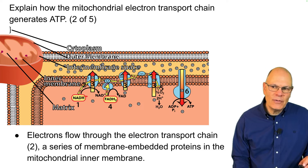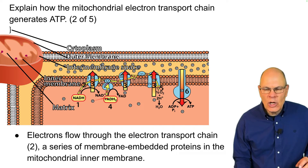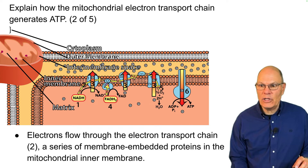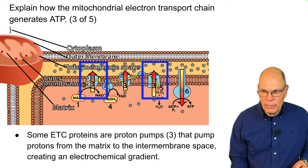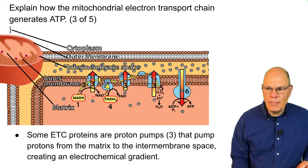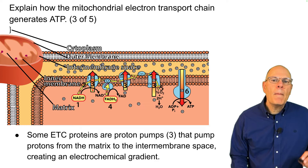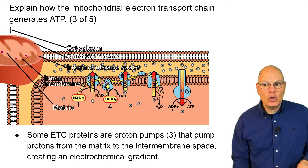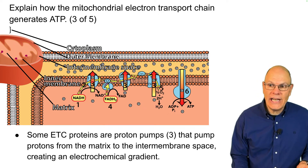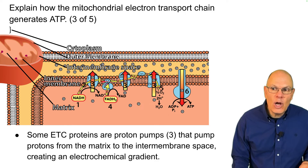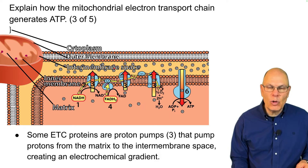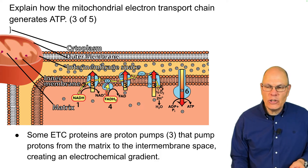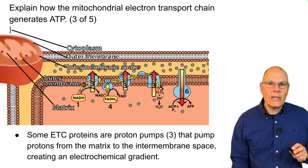Notice that NADH comes in first. It has a little bit more energy in its electrons than FADH2, which drops its electrons off a little bit further down the chain. Some of these electron transport proteins are proton pumps, and they pump protons from the matrix to the intermembrane space. Pumping is active transport that requires energy — that energy comes from this flow of electrons. Notice there are fewer protons on one side and more on the other. Active transport requires energy, and that creates an electrochemical gradient.